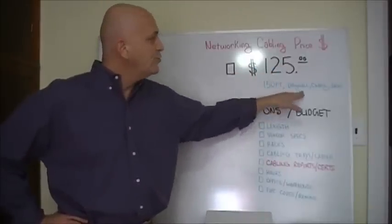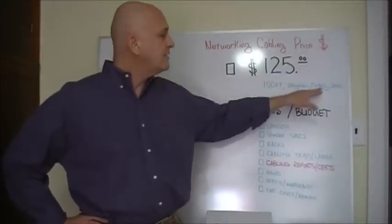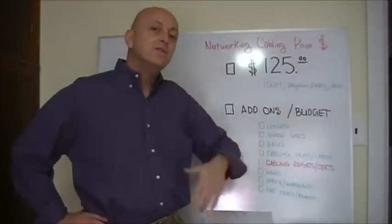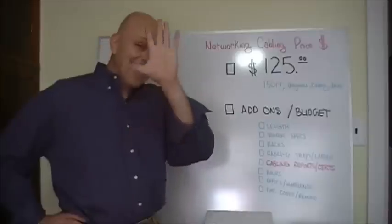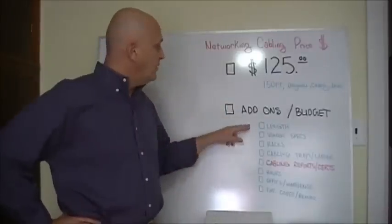150 feet, drywall insulation, typically in an office, caddies and jacks. So plan that minimum. So here we go. Add-ons.